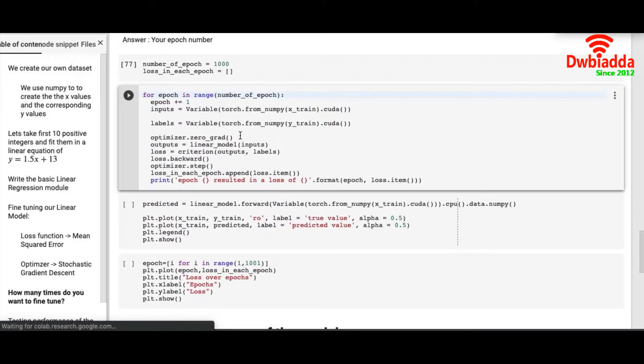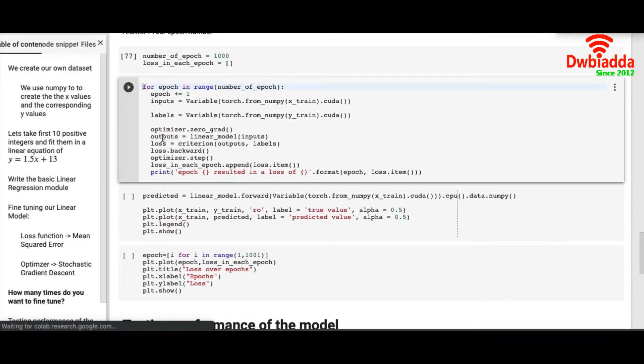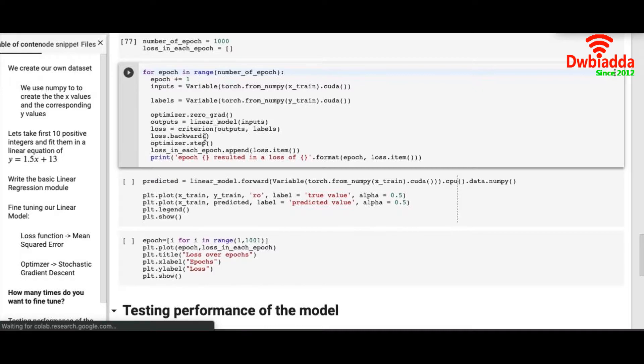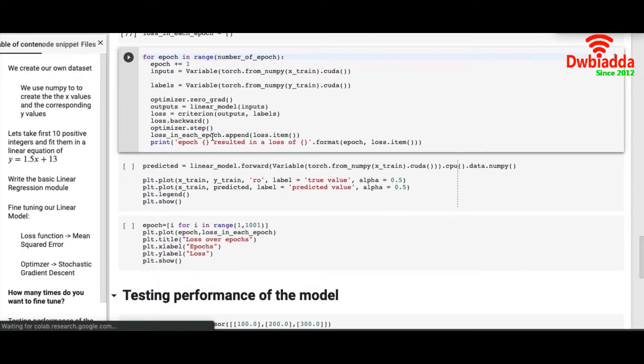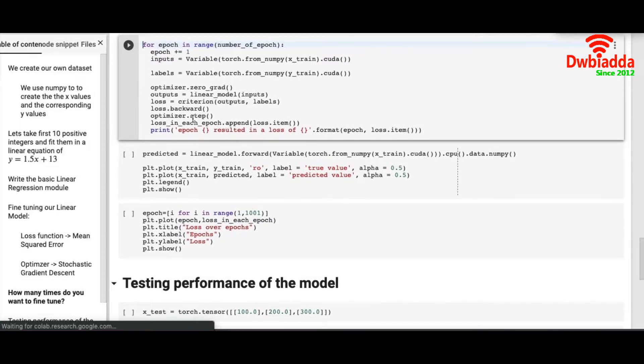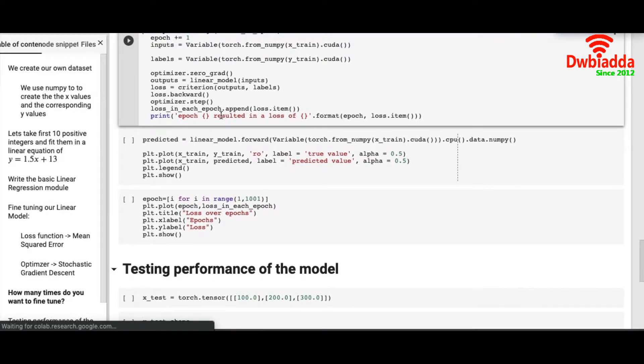Optimizer.zero_grad basically initializes all the gradients on each epoch. Outputs has all the predicted values that linear model predicts on the input values. Then we have to calculate the loss that is done through MSE, and it compares outputs, that is the predicted variables, and the actual labels from the equation. After that I call loss.backward which is basically the backpropagation. After that we have optimizer.step. Basically it calls the SGD optimizer.